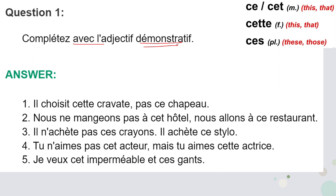Moving to the first question, the first question is complete with demonstrative adjectives. So as we know there are 4 types of demonstrative adjectives: ce, ces, cette, and cet. So 'ce' is used for masculine, and 'cet' is also used for masculine — that is for 'this' and 'that'.